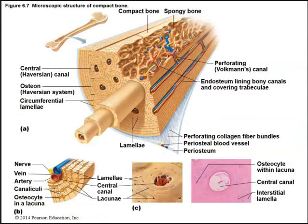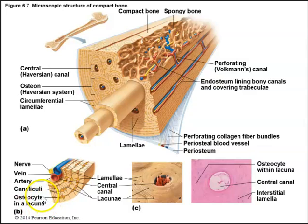The microscopic structure of compact bone from the diaphysis of a long bone shows the osteon (a rounded structure also called the Haversian system), concentric lamellae, osteocytes in lacunae, thin spidery canaliculi allowing communication between osteocytes, and a central canal in the middle carrying blood vessels and nerve fibers.